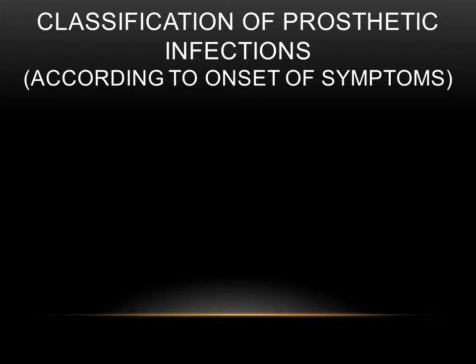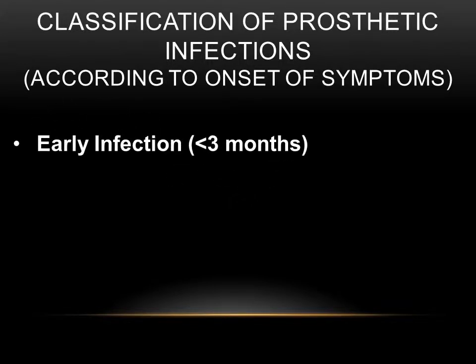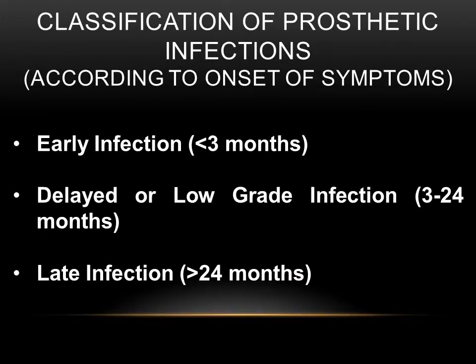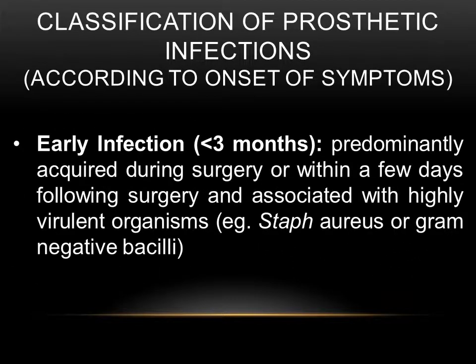The classification of prosthetic infections according to the onset of symptoms is divided into three categories. Early infection, with symptoms occurring less than three months from the date of surgery, are predominantly acquired during or within a few days of surgery and are associated with highly virulent organisms such as Staph aureus or Gram-negative bacilli.